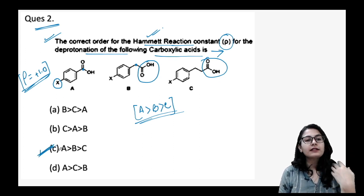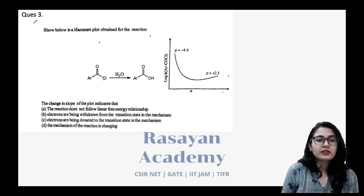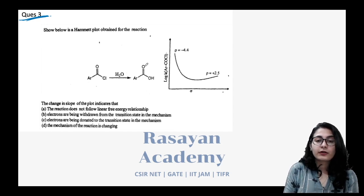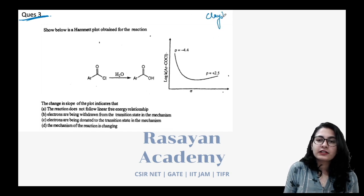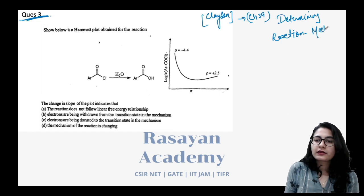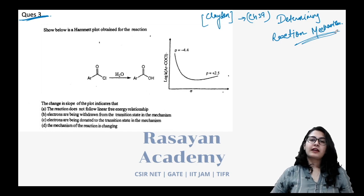Question three is a GATE chemistry question. The same graph discussed here is also present in Clayden, Chapter 39 — 'Determining Reaction Mechanism,' second edition — so you can open that chapter and study further. The question presents a Hammett plot for a specific reaction and asks you to interpret it.